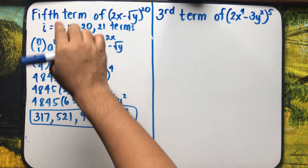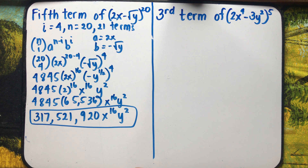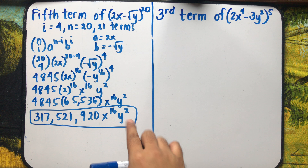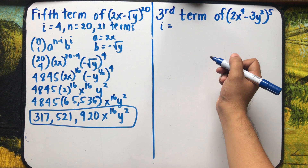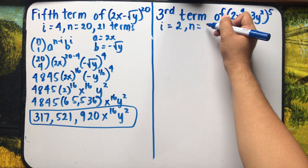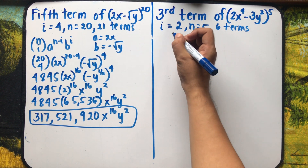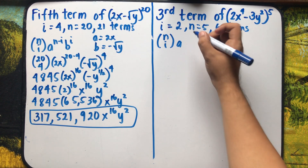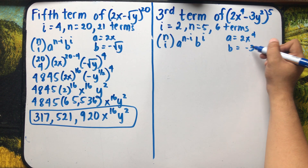So the fifth term of (2x - √y)^20 is 317,521,920x¹⁶y². Now for our last example: find the third term of the expansion of (2x⁴ - 3y²) raised to 5. For the third term, i equals 2, and n equals 5, giving us 6 terms. Here a equals 2x raised to 4, and b equals negative 3y squared.